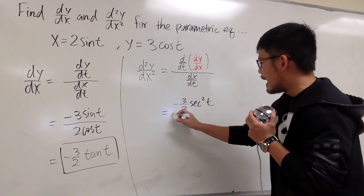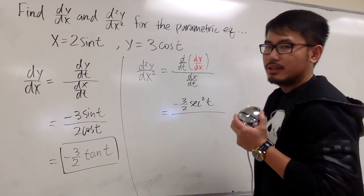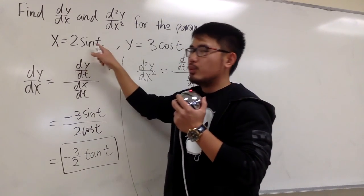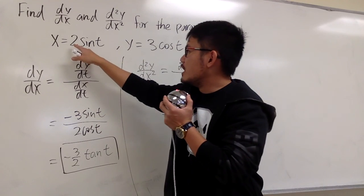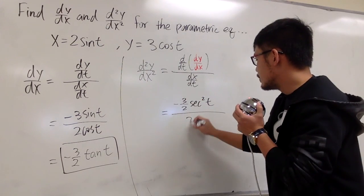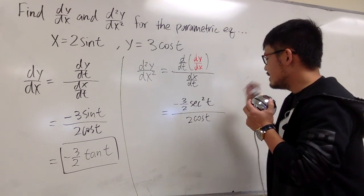And then we divide it by dx/dt, the derivative of x with respect to t. The derivative of 2 sin t is 2 cos t.